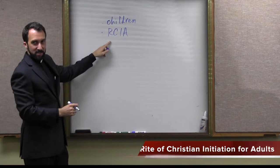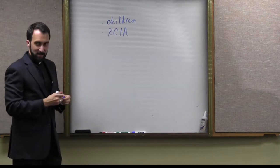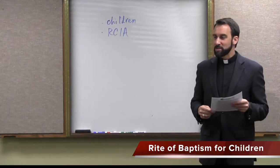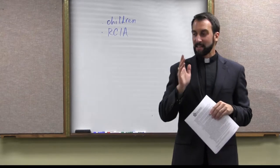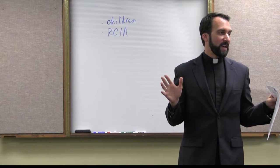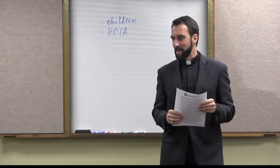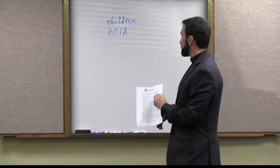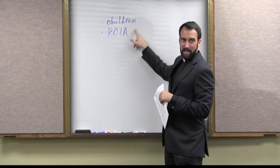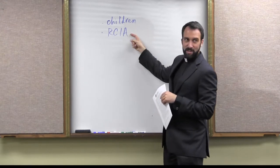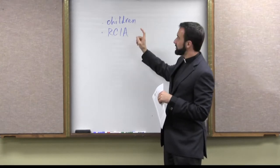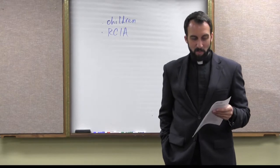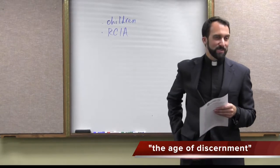If you're an adult, there's one process of being initiated into the Church. If you're a child, there's another. We'll start with the baptism of children. The revised rite for baptism of children comes to us from 1969 — four years after the Second Vatican Council concluded in 1965. How do we distinguish children from adults? A lot of it has to do with whether one has reached the age of discernment, or what we used to call the age of reason.